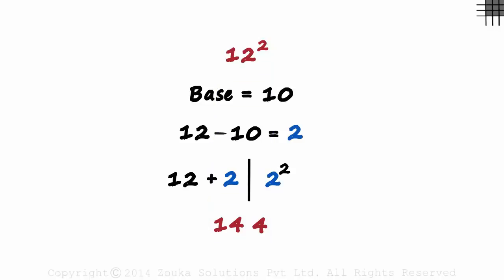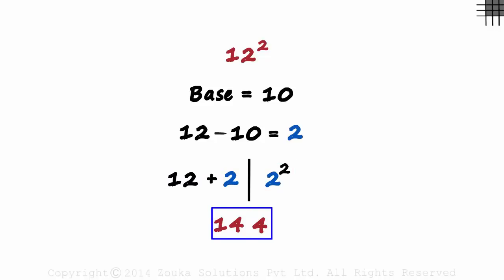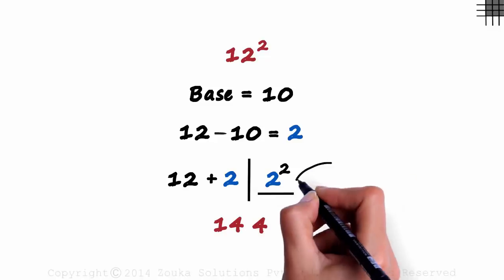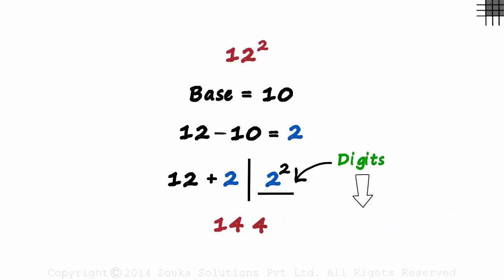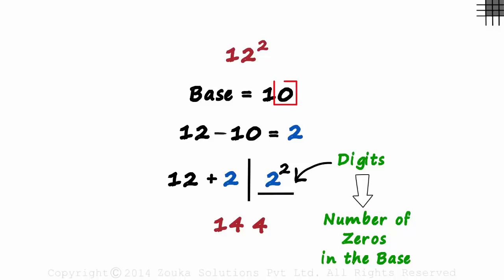Let's review it again. We found the base and then found the difference between the number and the base. After making a partition, on the left we wrote the sum of the number and the difference, and on the right we wrote the square of the difference, and that gave us the answer. We should be careful about just one thing: the number of digits we write on the right-hand side should be equal to the number of zeros in the base. Here, as there is just one zero in the base, we write just one digit on the right. If there were two zeros in the base, we would have had to write 4 as 04.